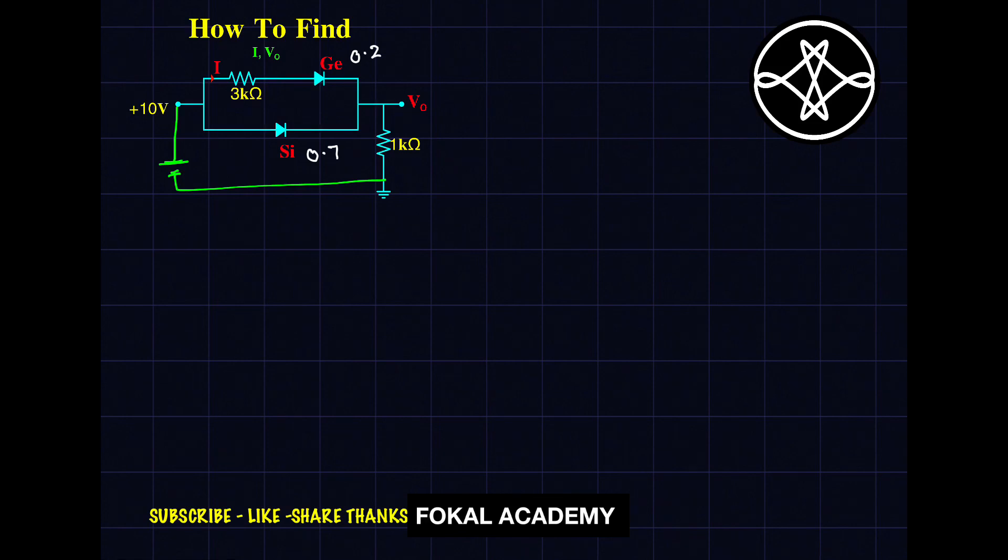According to the properties of parallel branches, both branches have the same voltage drop. That means whatever the voltage drop in this branch, that is the voltage drop in this branch. But here we have 0.7V and here 0.2V, so the voltage drop is 0.5V. This is the voltage drop across the 3kΩ resistor.